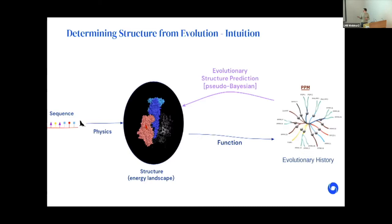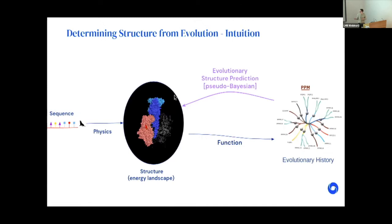Instead, we've turned to evolution. Structure has a causal effect on evolution via function, and structure tends to be approximately preserved over long evolutionary timeframes. There's been a lot of work on coevolution and contacts, but I think it's better to take a larger, pseudo-Bayesian approach: if I know that A caused these outcomes B, then if I look at all the Bs, maybe I can infer something about A. This is the basis of structure prediction from evolution. But it's still very difficult — for the vast majority of cases, the information extracted from evolution was very coarse, and you weren't able to solve highly accurate atomic-resolution structures.